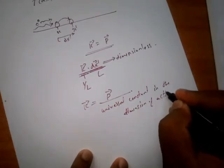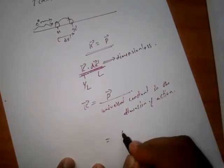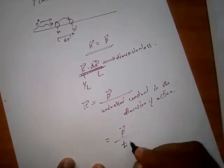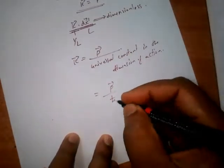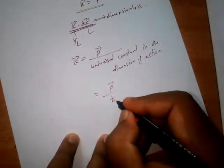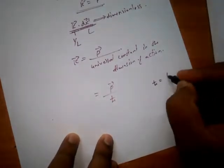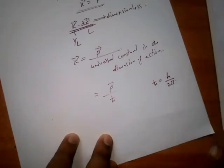Dimension of action that we have taken as p divided by ℏ. You know this is Planck's constant divided by 2π, ℏ = h/(2π).